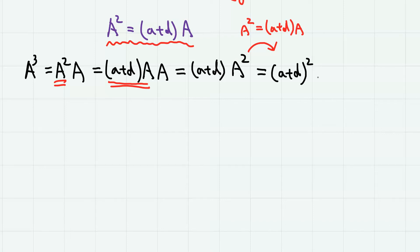and if we use A squared equals A plus D A again, we have A plus D squared matrix A. Let's do this one more time for the A to the power of 4, which is A cubed times A.